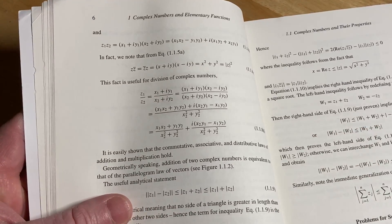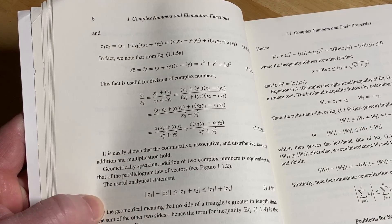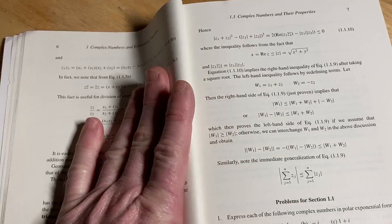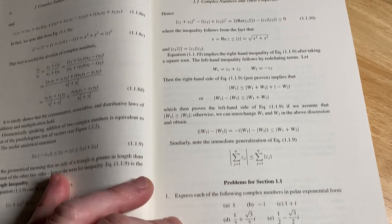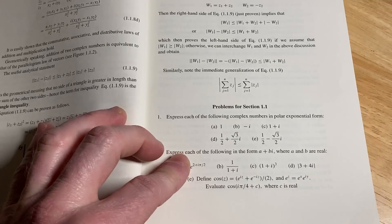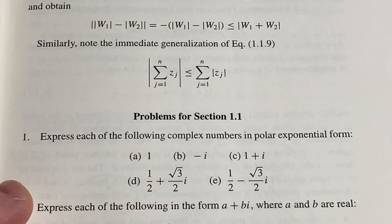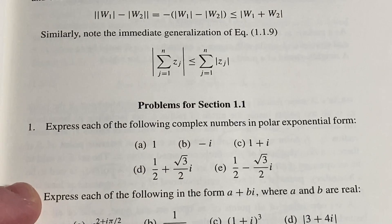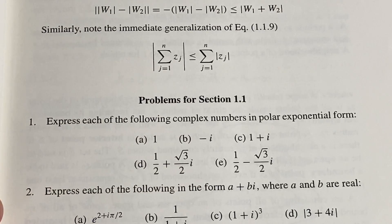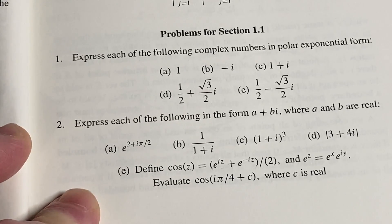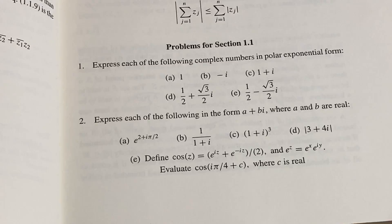Again, only con in my opinion is that it's a soft cover. That's the only thing I don't like about this book. And it doesn't, it's laying flat here, but it doesn't always lay flat. Here's some problems. Let's take a look at these. Express each of the following complex numbers in polar exponential forms. So you've got some exercises here.